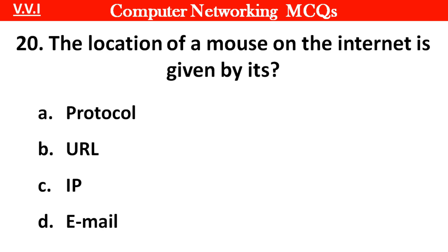Question 20: The location of a resource on the internet is given by its blank. Options: A. Protocol, B. URL, C. IP, D. Email. Right answer is option B: URL.